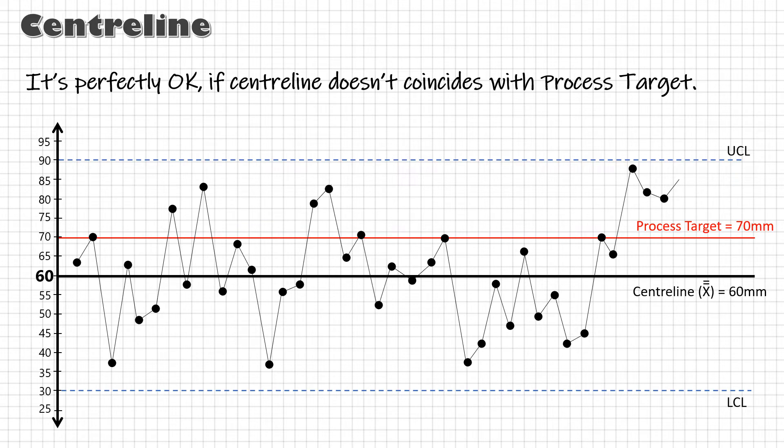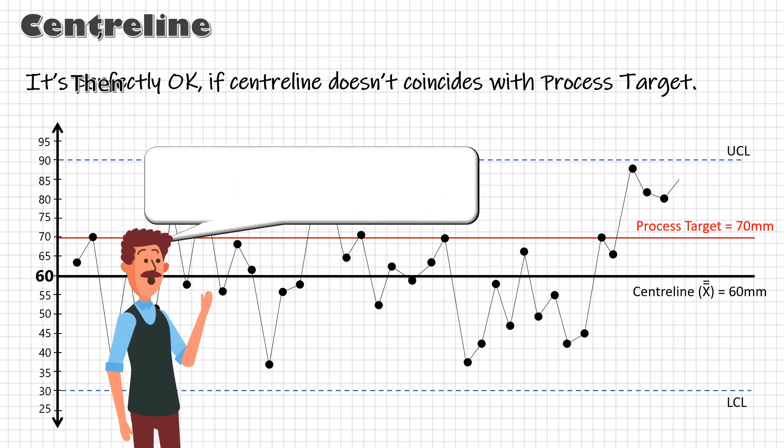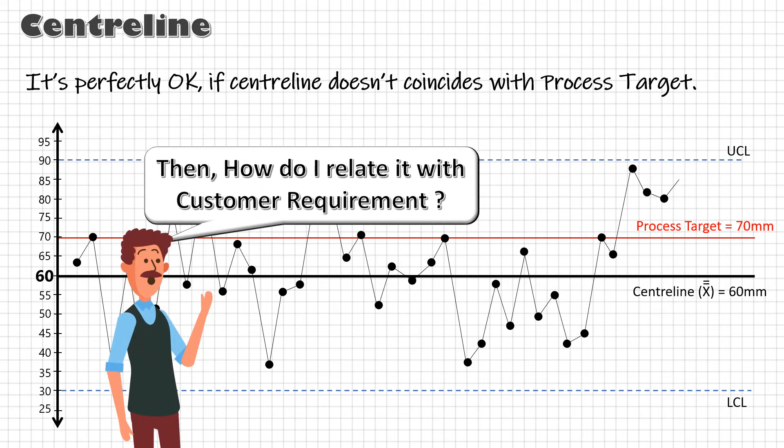Now there is one thing that you might have noticed. These control limits only represent what a process can do. But we are more interested in what we want the process to do. That is to produce parts with customer specified value.